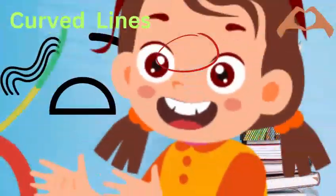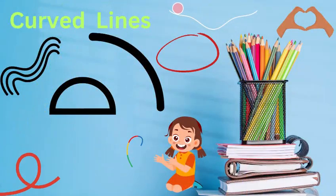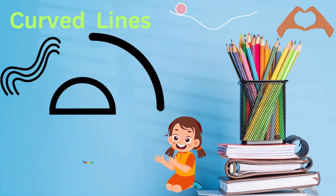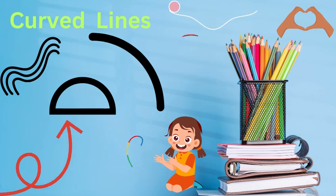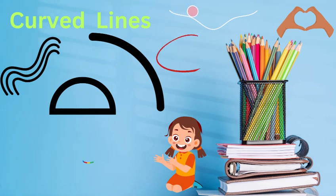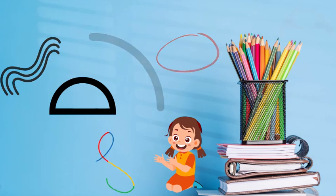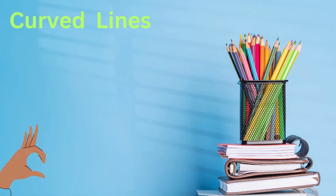Next, we have curved lines. They are soft and gentle. Imagine drawing a circle with your finger in the air. Can you feel how it's soft and round? That's like a curved line. It's like the shape of a ball or the smile on your face. Curved lines are wavy and smooth. Let's learn by examples.